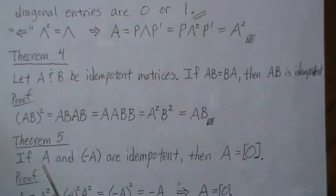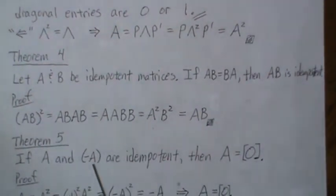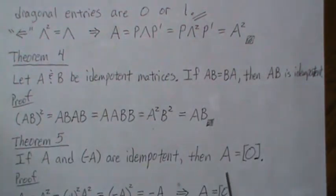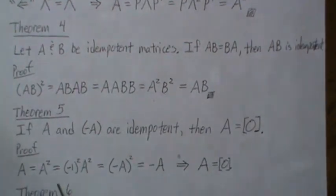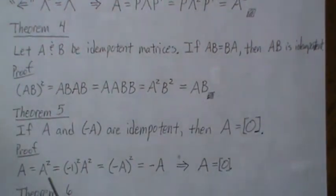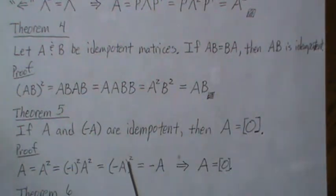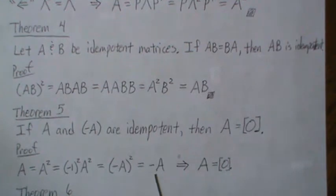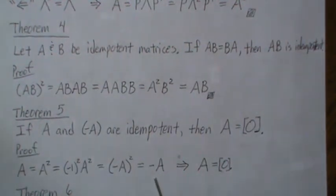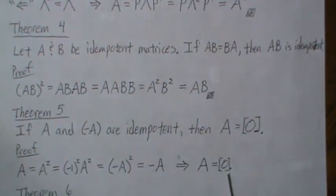Theorem five: if A and negative A are both idempotent, that implies A is the zero matrix. To prove this, let A equal A squared. But A squared equals negative 1 squared times A squared, which equals negative A squared. Since negative A is idempotent, that's negative A. The only way A can equal negative A is if all entries are 0, so A is the zero matrix.